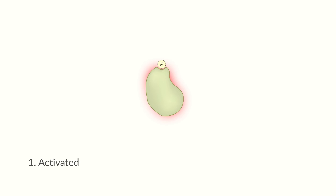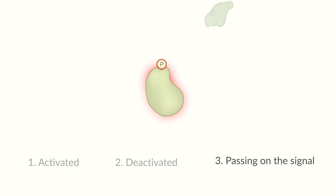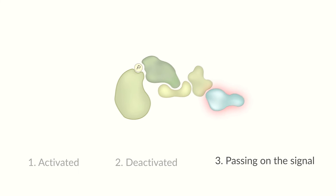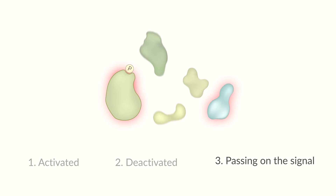Let's take a closer look at the phosphorylated protein. We previously mentioned that phosphorylation leads to the activation of a protein. However, this describes only one out of three possible effects. First, the protein may become activated. Second, the protein may be deactivated. Third, the transferred phosphate group can be a signal to other proteins to interact with the target, thereby passing the signal on.